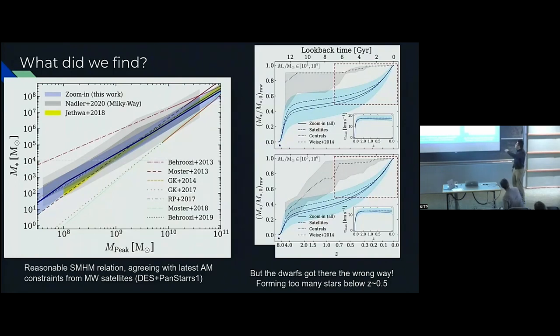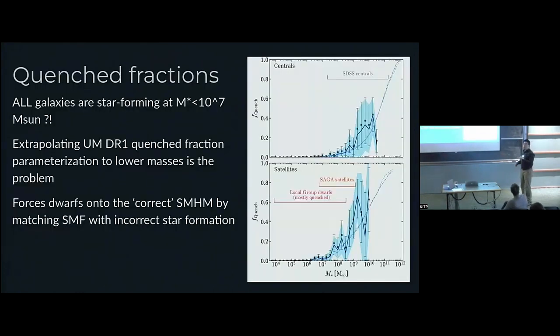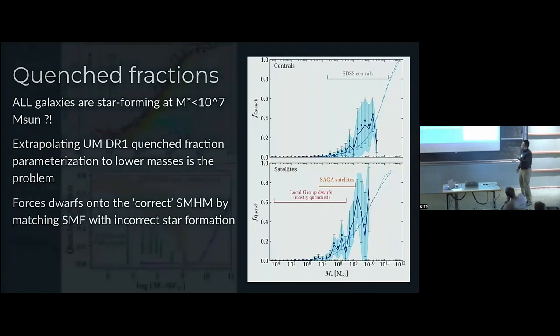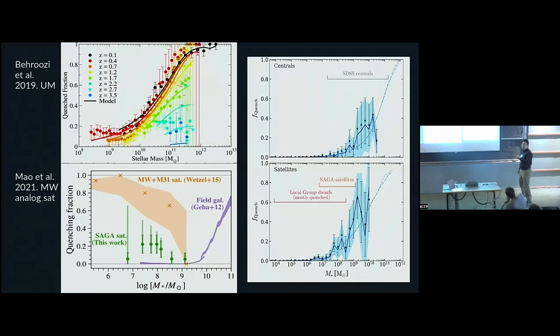If we look at the quench fractions, this functional form of an error function that was parameterized for the high mass constraints originally forces both field and satellites to have a zero quench fraction towards redshift zero. If you use a combination of the SFR versus halo mass scaling that's also extended down, it gives you this very weird late times star formation. If we look at the newest observation data from SAGA or Milky Way, there should be a probability of non-zero quench fraction that's allowed by this.